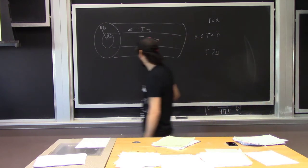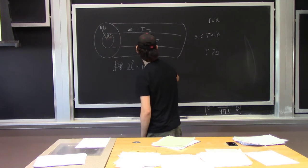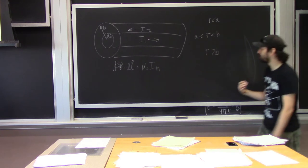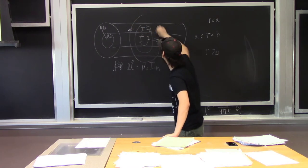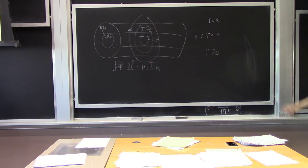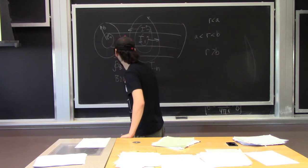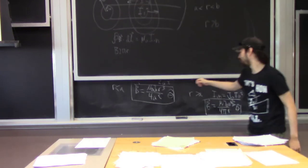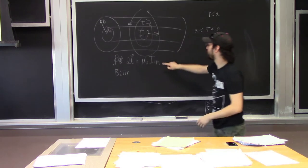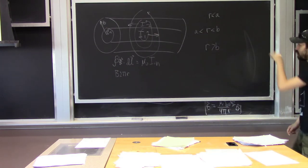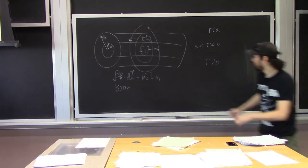Instead of two regions, we now have three: R less than A, R between A and b, and R greater than b. We write down Ampere's Law: integral of B dot dL equals μ₀ times I_in, and draw three Amperian loops. The left-hand side of Ampere's Law is always going to be the same — just B·2πR — because we have the same symmetry as the last problem.